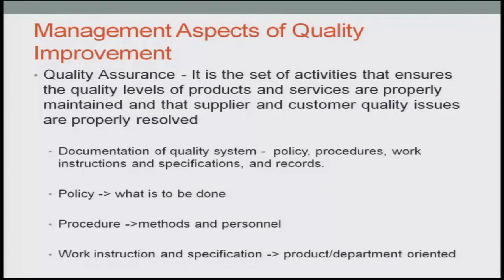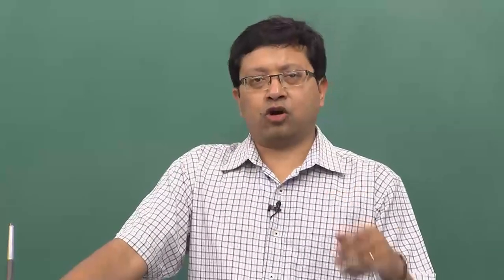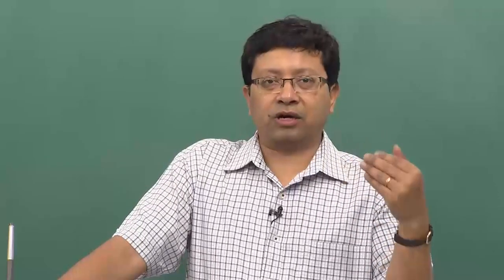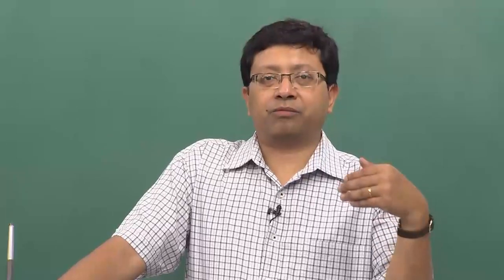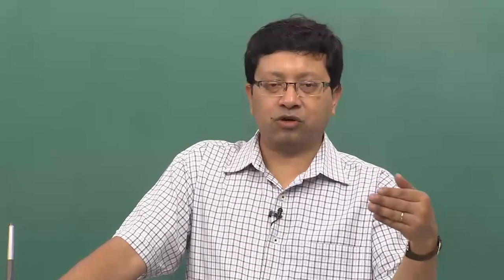Coming back to quality assurance — it is the set of activities that ensures the quality level of products and services is properly maintained such that supplier and customer quality issues are properly resolved. How do you resolve this using quality assurance? Obviously there would be documentation — documentation of how the quality system works, what sampling plan you have, how you collect the products, what types of process control charts there are, and what type of training you give to the shop floor personnel who are doing that work.